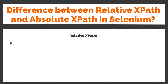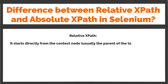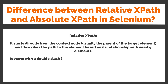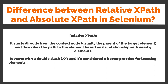Relative path starts directly from the context node, usually the parent of the target element, and describes the path to the element based on its relationship with nearby elements. It starts with a double slash (//), and it's considered a better practice for locating elements in Selenium tests, as it reduces the impact of changes in the page layout.